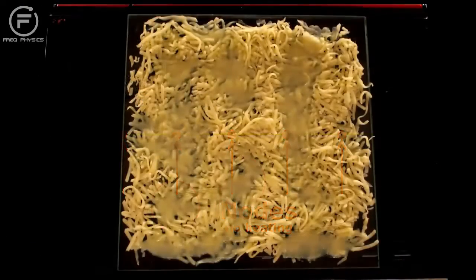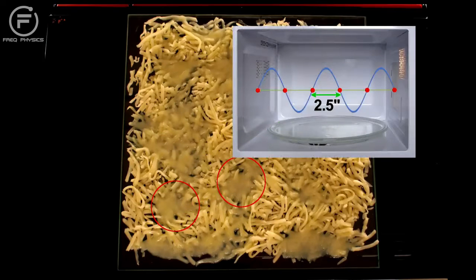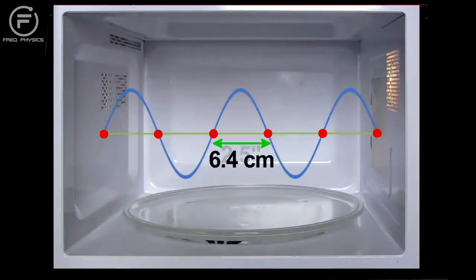If I measure the distance between melted cheese spots, I find about two and a half inches. That would be half the wavelength, the distance between nodes, and is pretty close to the actual wavelength of microwave radiation used. Using that wavelength, I can estimate the microwave radiation's frequency.